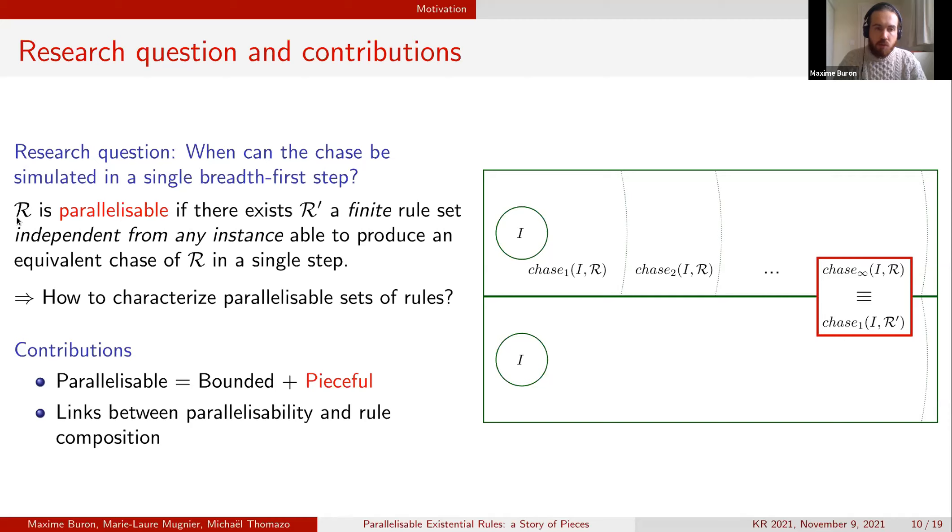Meaning that there exists another finite set of rules R prime independent from any instance able to produce an equivalent chase of R in a single step. We want to be able to characterize the set of rules that are parallelisable.